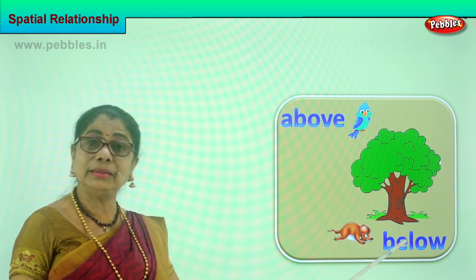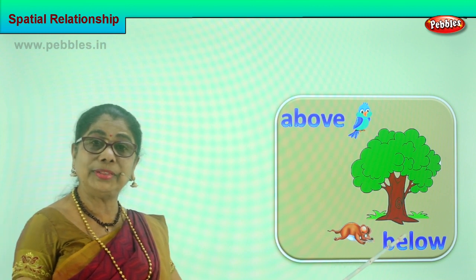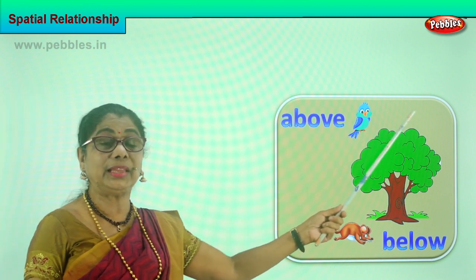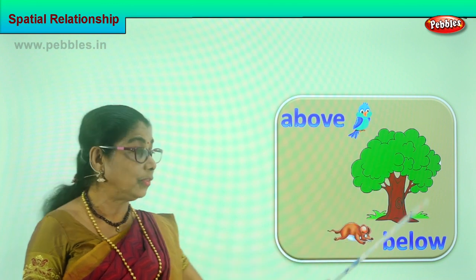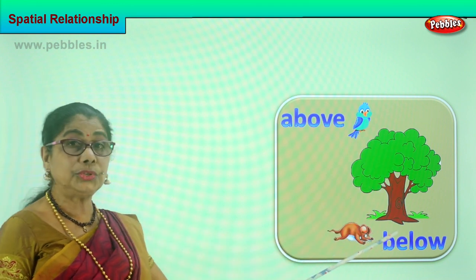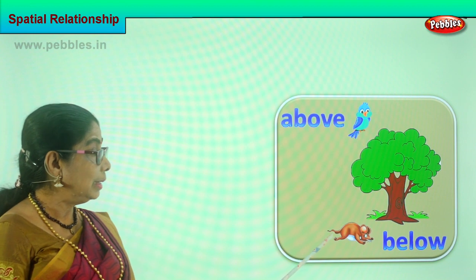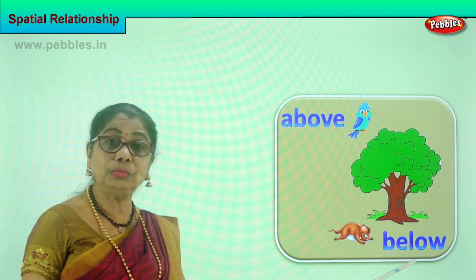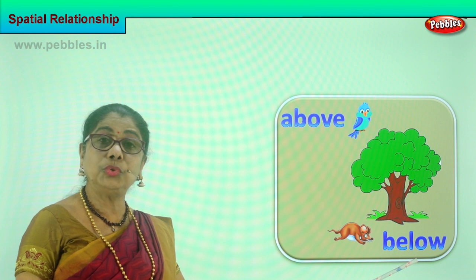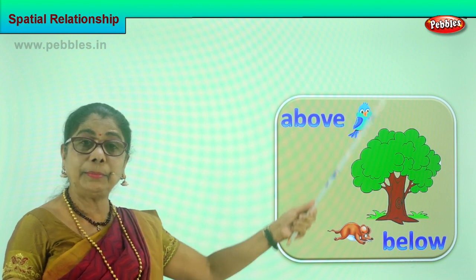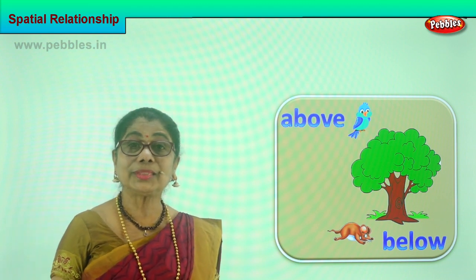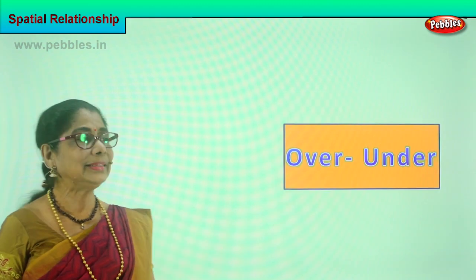There is a little mouse under the tree in the ground over there. Above — what flies above the tree? A birdie flies above the tree. What goes into the hole? A little mouse is here below, almost going into the hole. Below. Above is the bird, below is the mouse. Good.